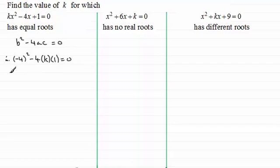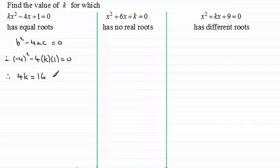If we clean this up, we've got 16 minus 4k. So if I add 4k to both sides I end up with 4k equaling 16. And from that, if we divide both sides by 4, it follows that k equals 16 divided by 4, which is 4.